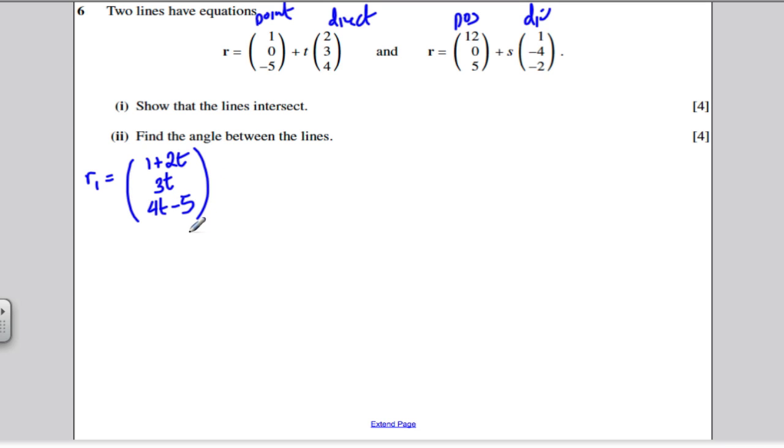And the other vector equation, I'm going to do the same thing. That's 12 plus S, it's 0 minus 4S, and it's 5 minus 2S. Now, if they intersect, their I component would be the same, their J component would be the same, and their K component would be the same.